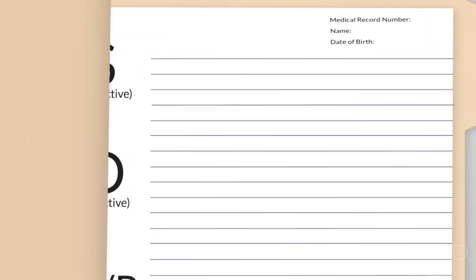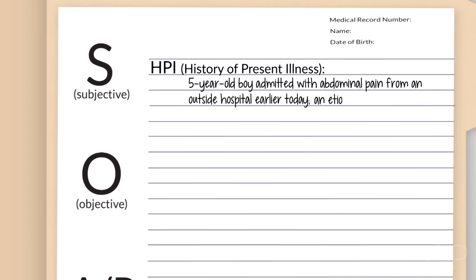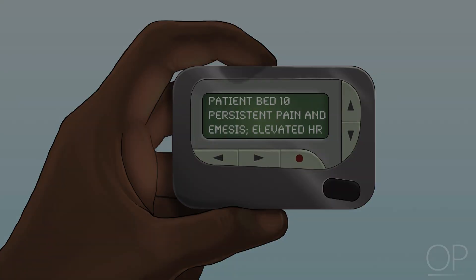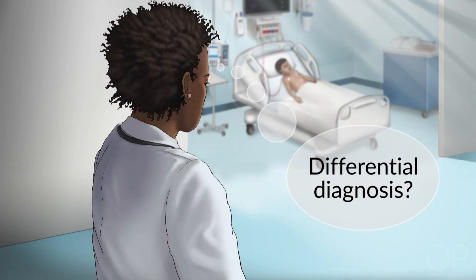Grover is a five-year-old boy admitted with abdominal pain from an outside hospital earlier today, and an etiology for his abdominal pain has not yet been identified. You are the GI resident on call overnight, and you receive a page from the nurse that Grover is having persistent pain and emesis. She also notes that his heart rate seems to be elevated. As you hear this, you should be thinking of your differential diagnosis.